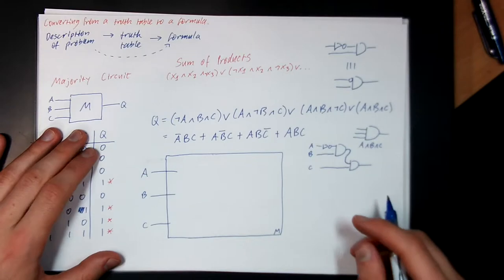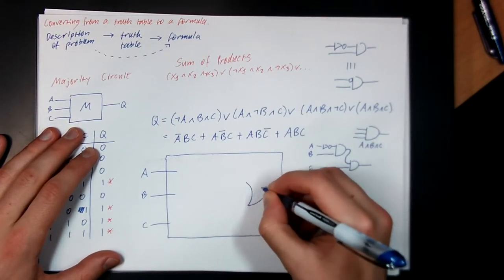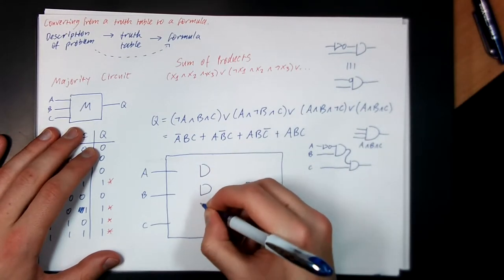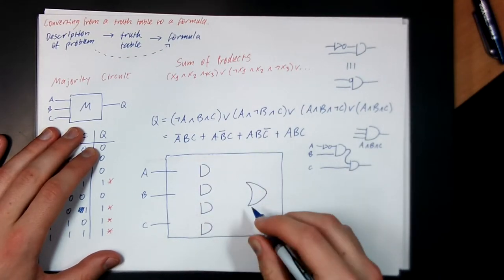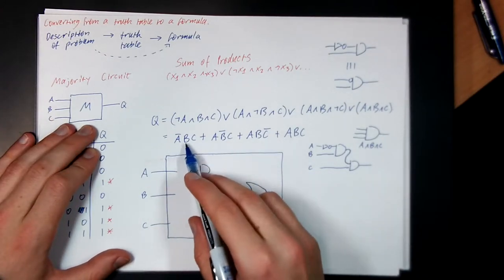Again, that OR gate is just going to be ORing all the inputs together. So here's my big OR gate. Here are my four AND gates. And then I just wire them up appropriately.